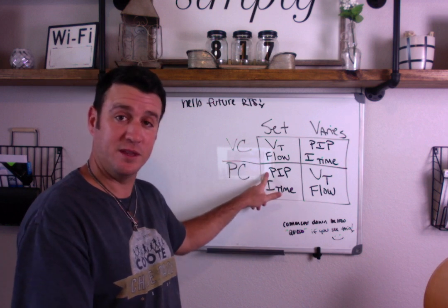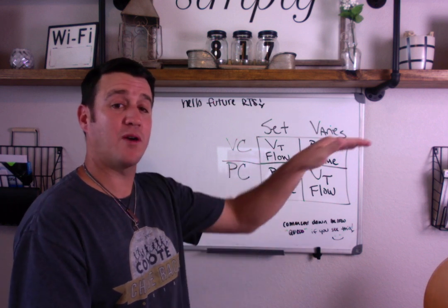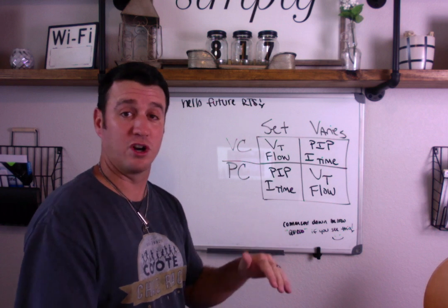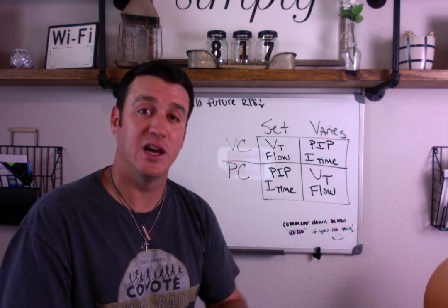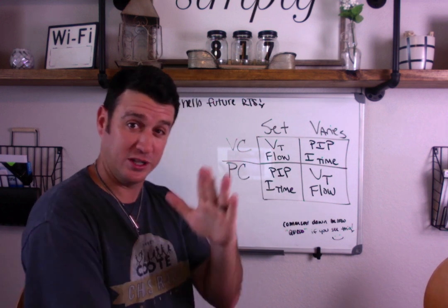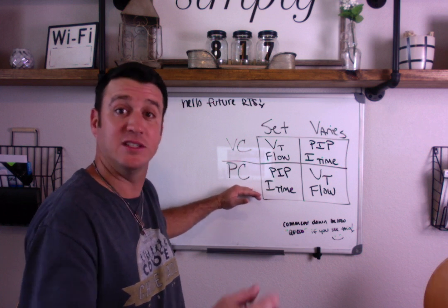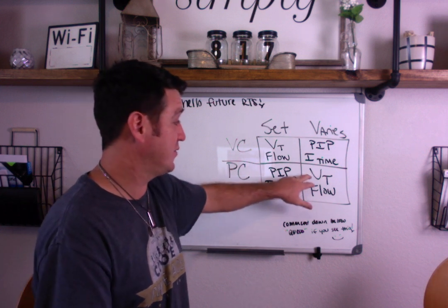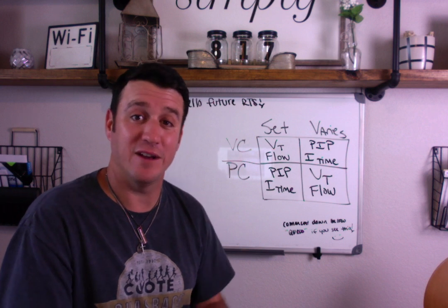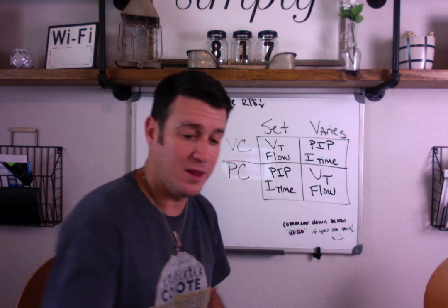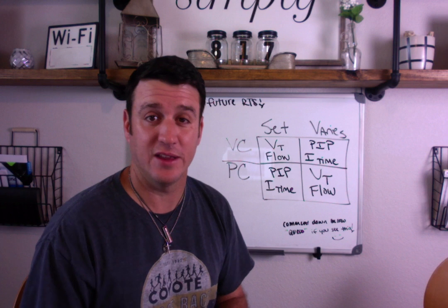In pressure control, we set PIP and we hold that PIP for a set I-time. Instead of getting a gradual rise in peak inspiratory pressure, in pressure control we get a rise in pressure and a hold in pressure, which yields a square pressure waveform. Every pressure waveform will be the same when you're in pressure control because it's set. When you look at your tidal volume and flow, you may see variations from breath to breath — because they vary in pressure control. We're going to do this one mode at a time and then mix them together and break them down.